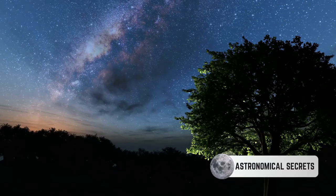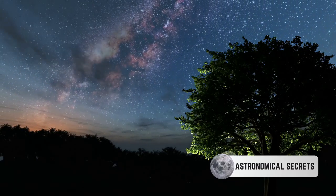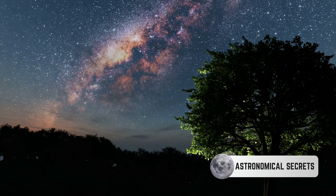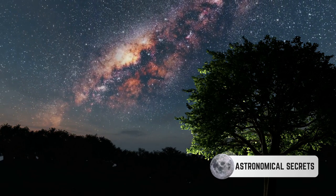Our galaxy has four major spiral arms, each named after the constellations they point towards. Norma, Scutum Crux, Sagittarius, and Perseus.